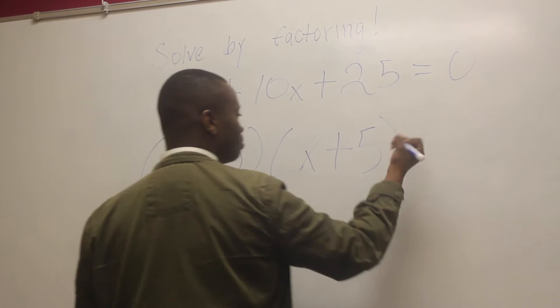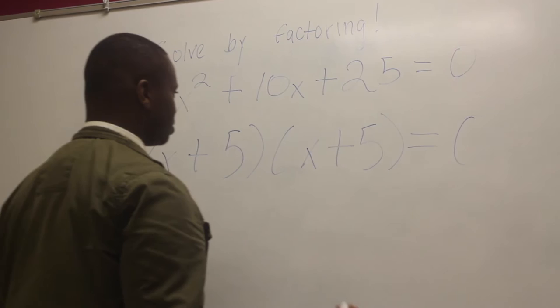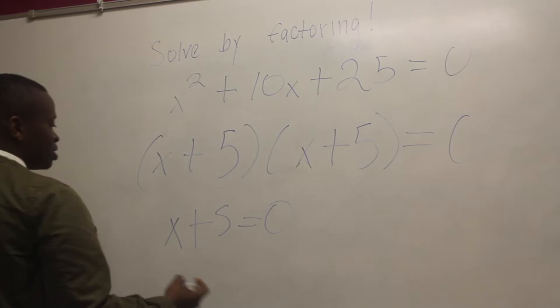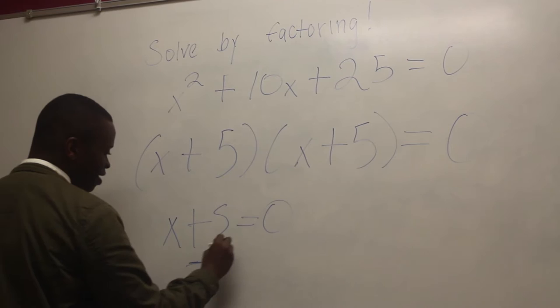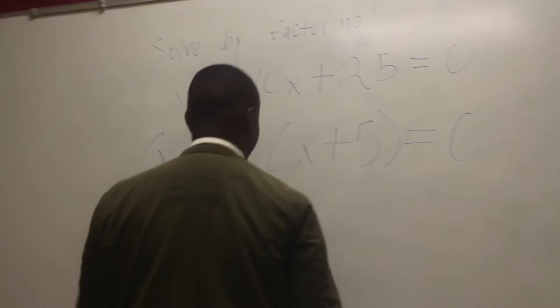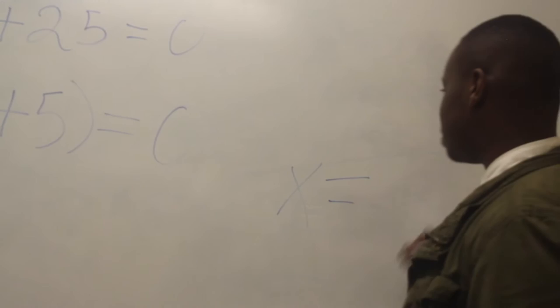You're going to set both equal to zero, but since these are the same, you only need to set it equal to zero once: X plus five equals zero. You're setting it equal to zero to figure out what X is. So you solve it like any simple algebraic expression — subtract five from both sides to get X by itself — and you'll see that X equals negative five. That is your final answer for both, so X equals negative five.